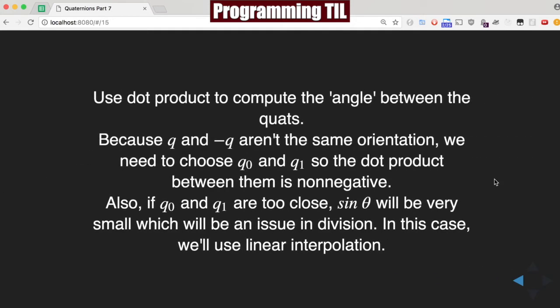A few notes that you should be aware of. If we're going to use the dot product, we're going to use the dot product to compute the angle between the quads. And because q and negative q aren't the same rotation, we need to choose them so that the dot product between them is not negative.